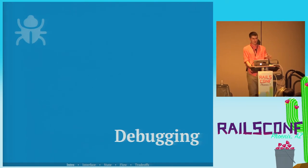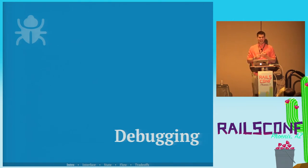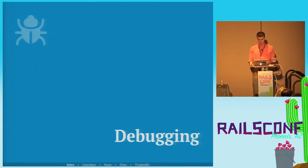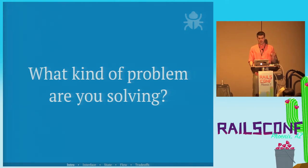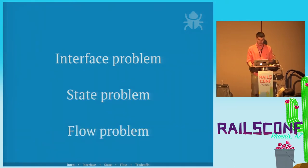This talk goes pretty quickly and has a lot of code examples. All the examples are up on the GitHub repo, link provided afterwards. Don't panic — you can go back and review. First question: what kind of problem are you solving? I'm going to define three: interface problems, state problems, and flow problems.